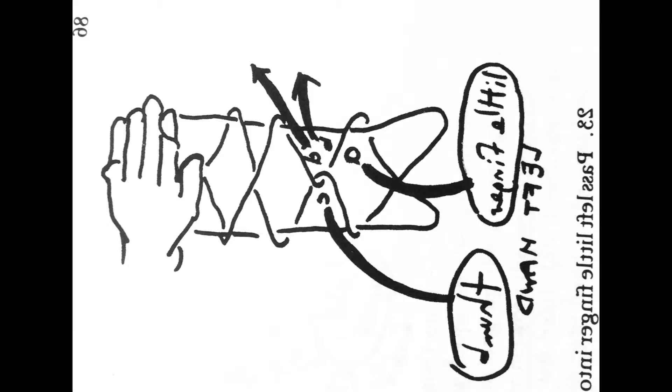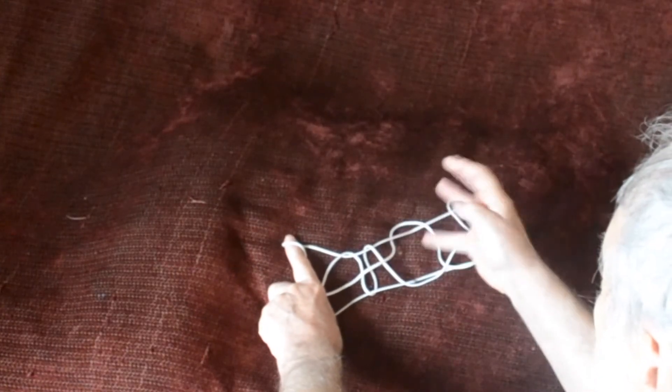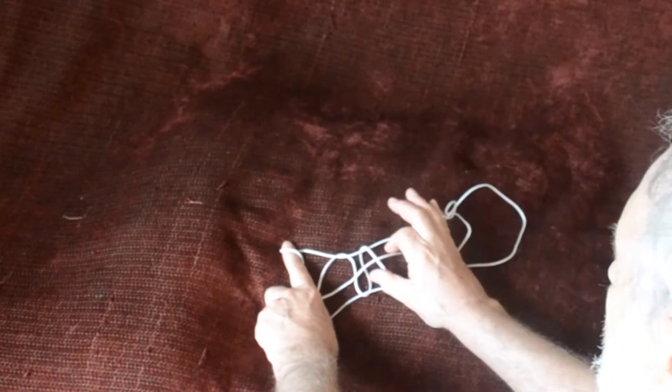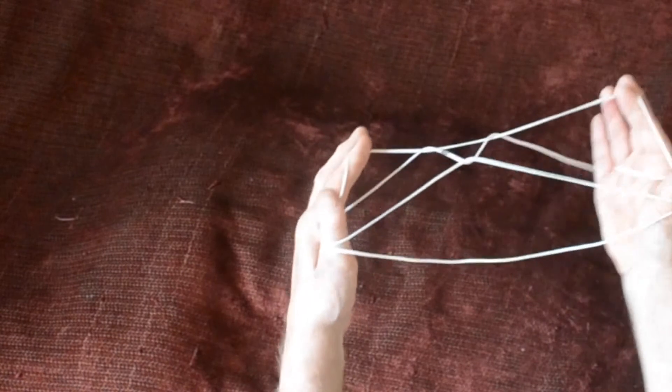Again, I've shown the drawing. So the thumbs go away from you under the double string. There it is, there it crosses this time, not a link. Go under that cross. And the little finger goes under the single string.